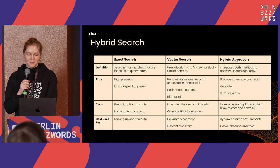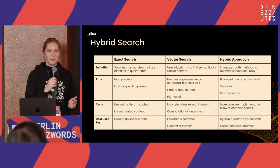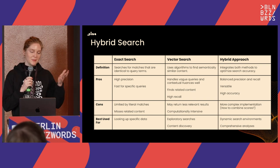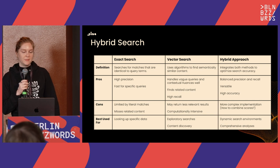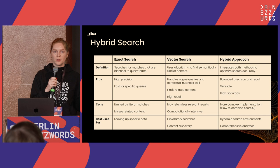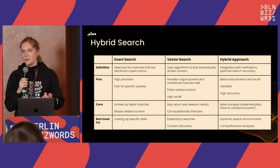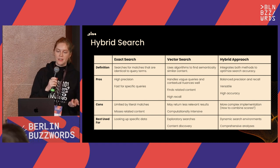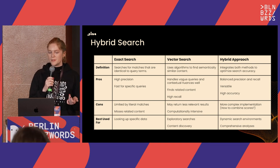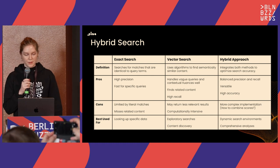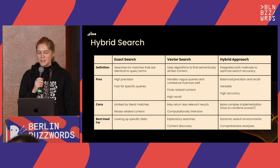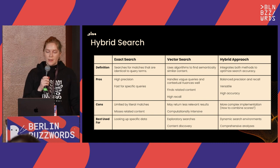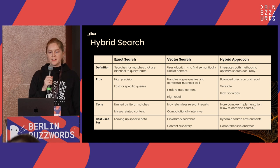For hybrid search: exact search matches documents identical to query terms — it has really high precision, is fast for specific queries, and tools like Elasticsearch optimize for it. The con is it's limited to literal matches and may miss related content. It's great for looking up specific data where you don't want vaguely related results.